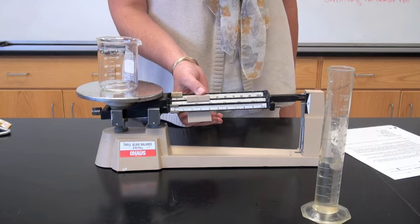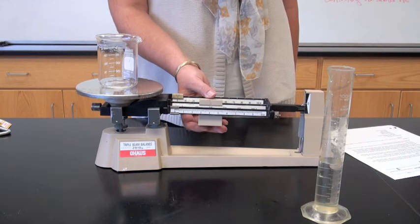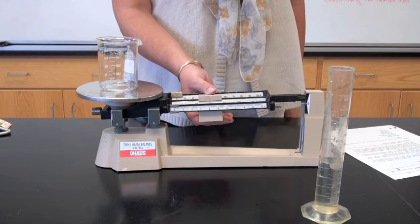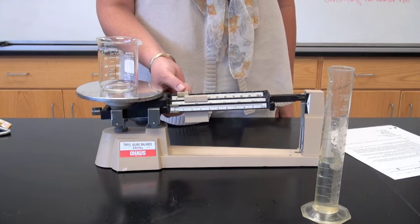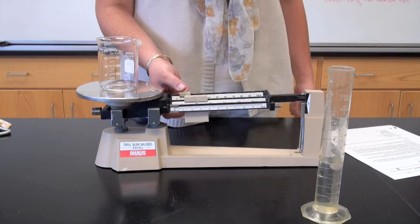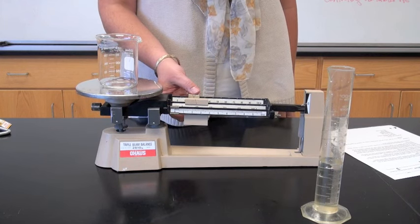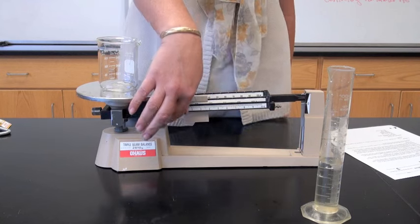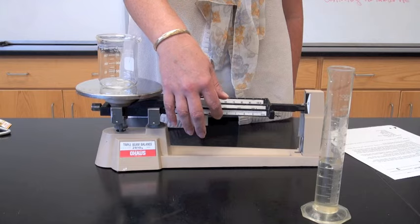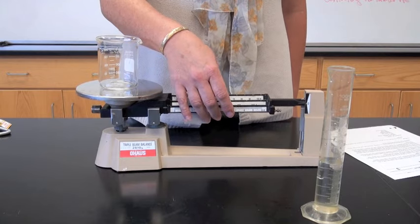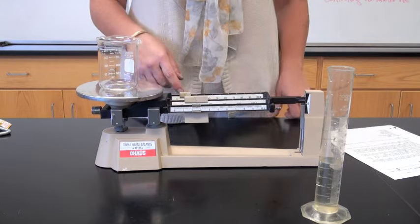move the largest rider first, make sure it's resting on a notch, then keep going. It's resting on the notch at 200, but it dropped, so that's too much, slide it back one notch. Now use the ten grams, one at a time. Still hasn't dropped, so now go to the next notch, and it drops, so that's too much, send it back one. Now you use the smallest rider until it zeroes out, and that's the mass of your beaker.